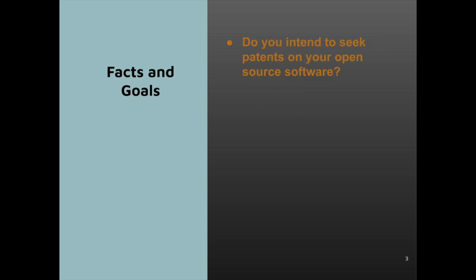The second important question is whether you intend to seek patent protection on the software you are going to release under the open-source license. This is a strategic legal question. If you are running a project for a non-profit purpose or for a hobby, you probably do not intend to seek any patent protection. But if you are engaged in business, the answer might be different. Although many developers start their project assuming they will never seek patent protection, they often revise this expectation as they build their business surrounding the project.